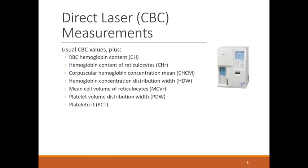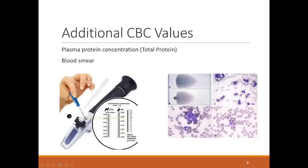Usual CBC values we get include red blood cell hemoglobin content, hemoglobin content of reticulocytes — which are red blood cells that are younger than normal and still contain their nucleus — corpuscular hemoglobin concentration, hemoglobin concentration distribution width, mean cell volume of reticulocytes, platelet volume distribution width, and platelet crit. A direct laser gives us a lot more information and can really measure those cells very specifically.